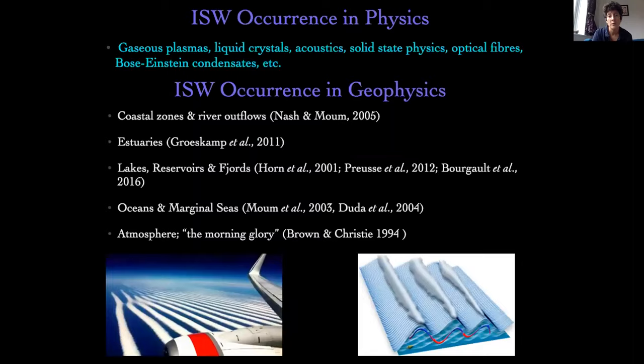Internal solitary waves occur in many physical settings — gaseous plasmas, liquid crystals, acoustics, optical fibers, etc. I focus on geophysical flows, particularly oceanic. In a geophysical setting, we get them in coastal zones and river outflows, estuaries, lakes, reservoirs, fjords, oceans, and marginal seas. In the atmosphere, they give rise to something called the morning glory effect, which is really quite spectacular — there are some pictures here to illustrate the process. If you're interested, a quick Google search will show you some really nice information.